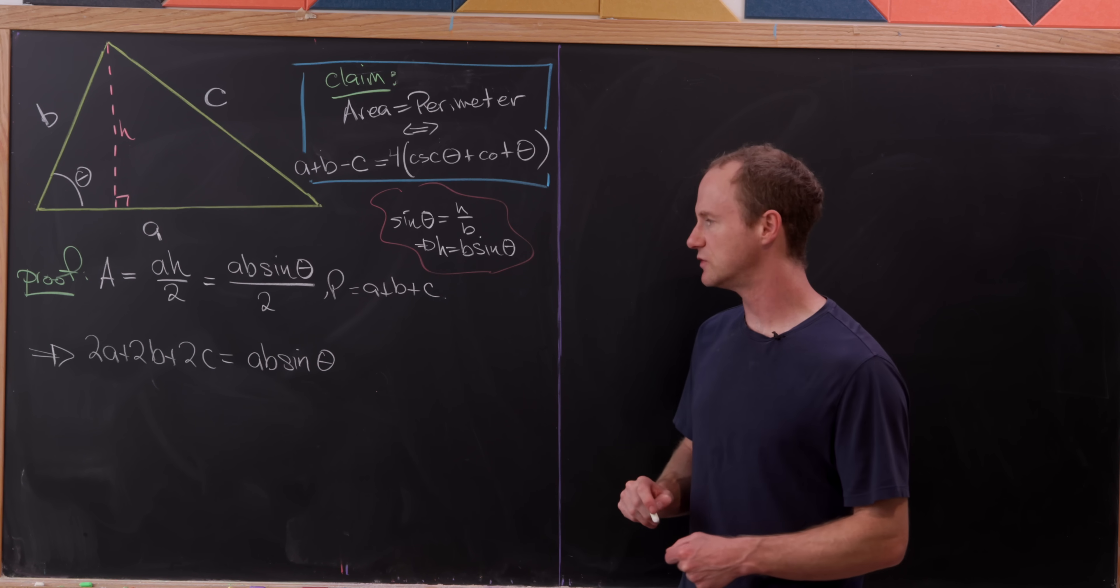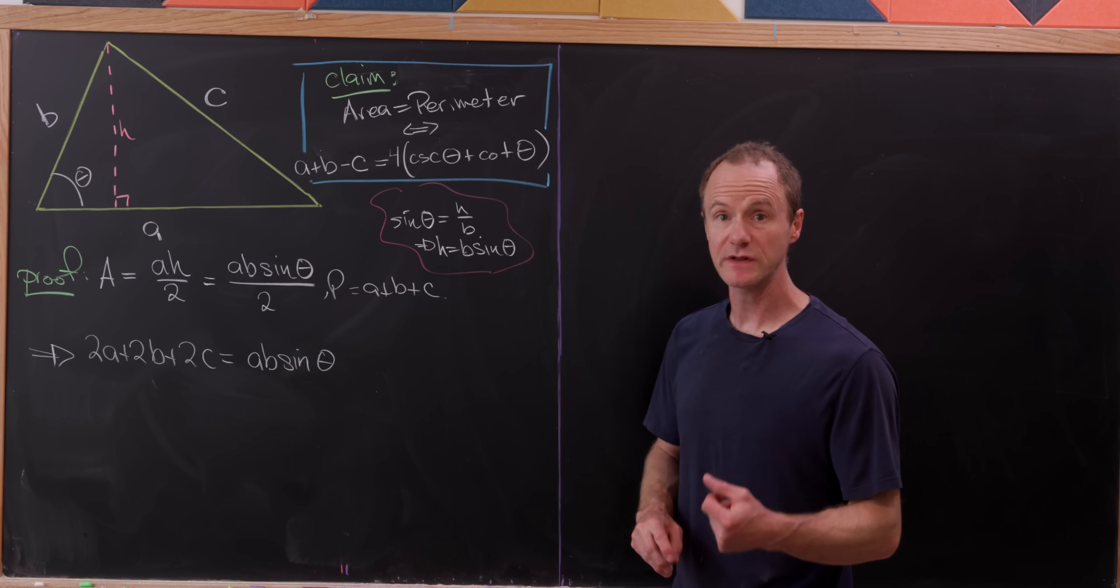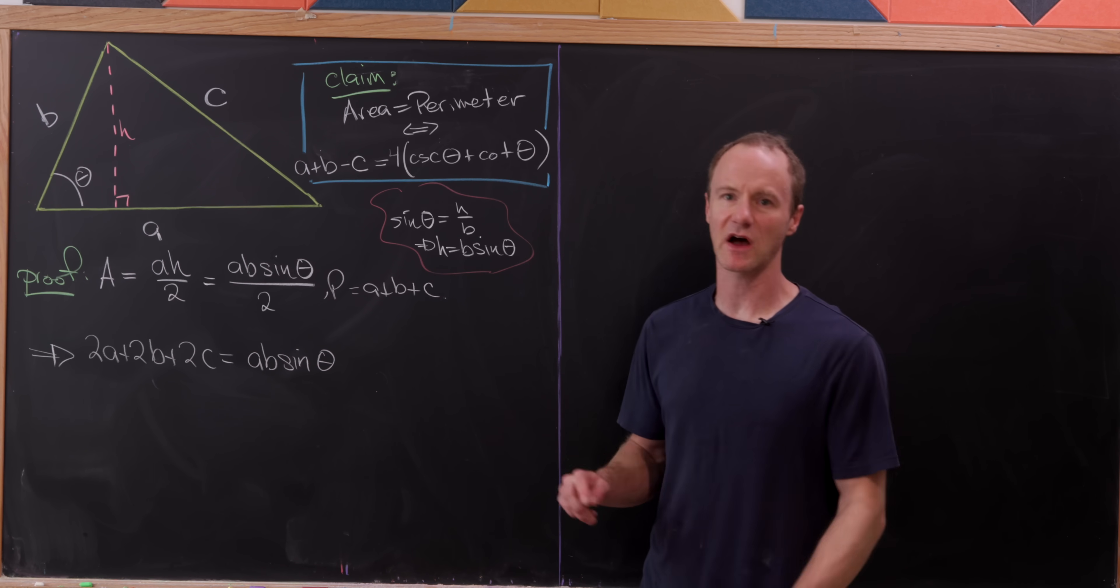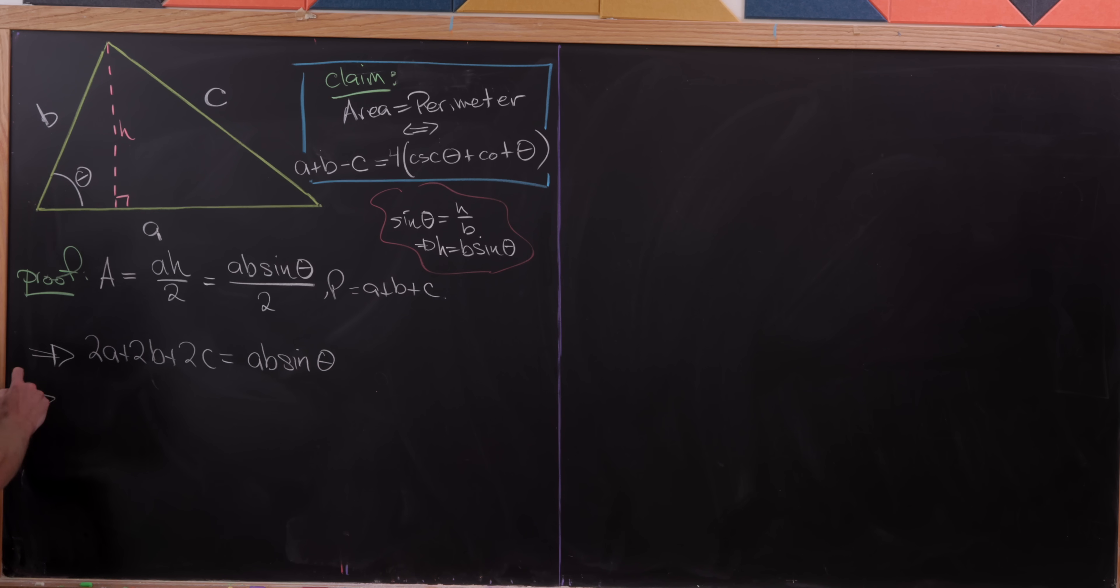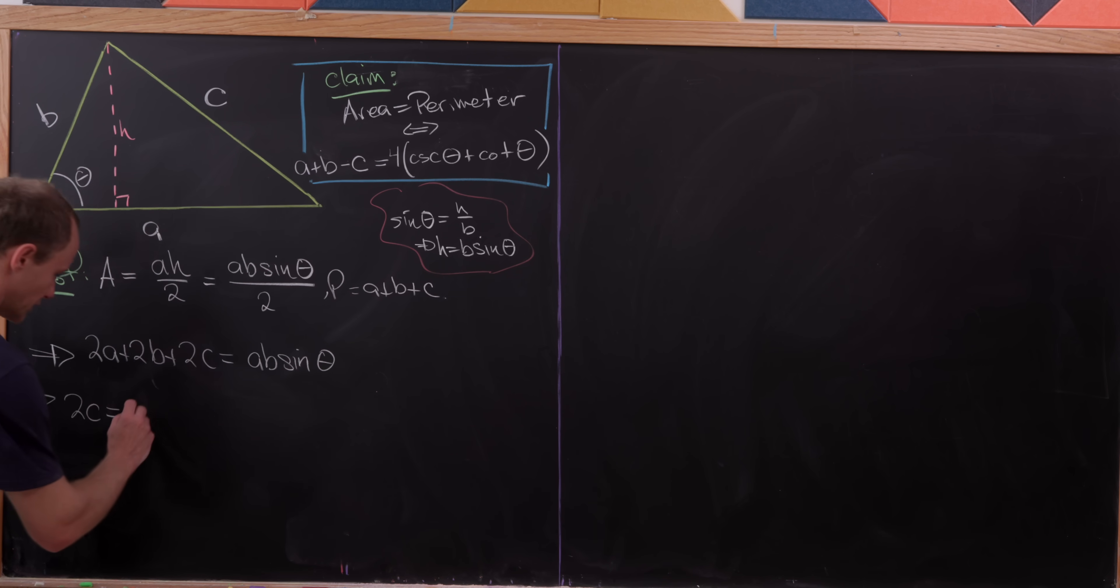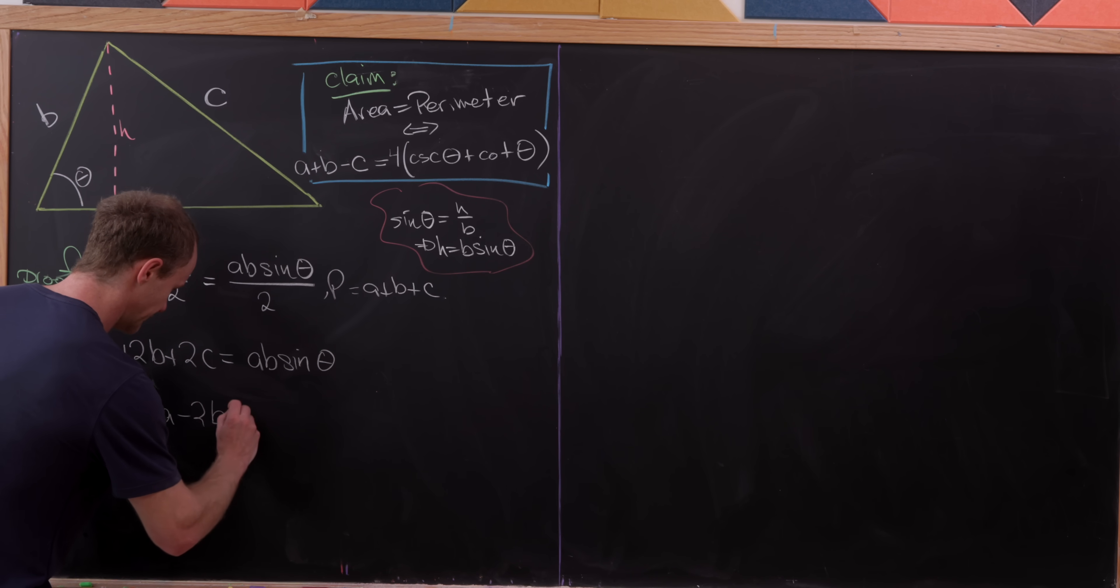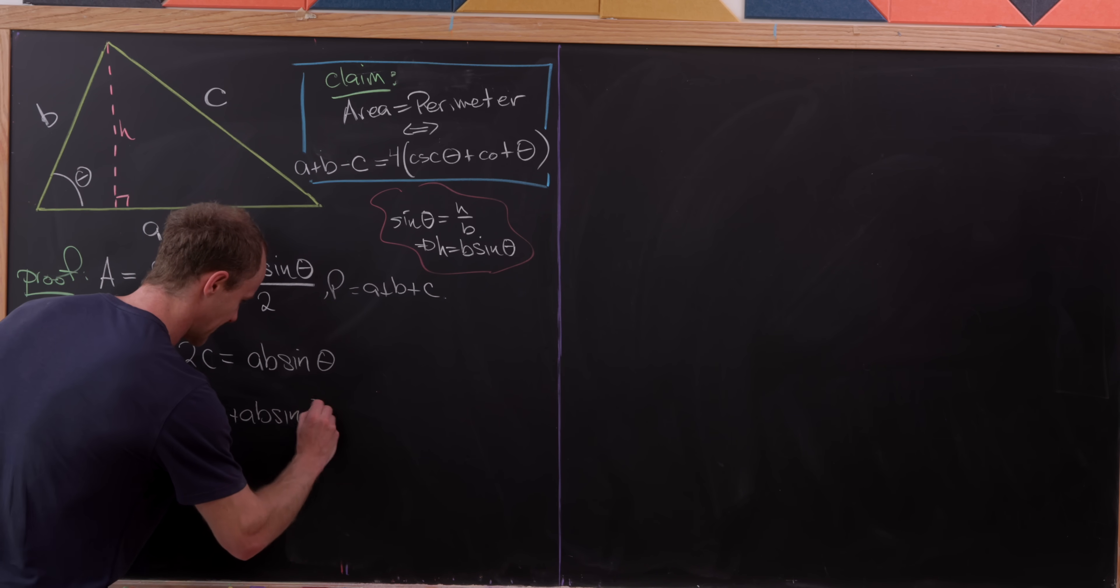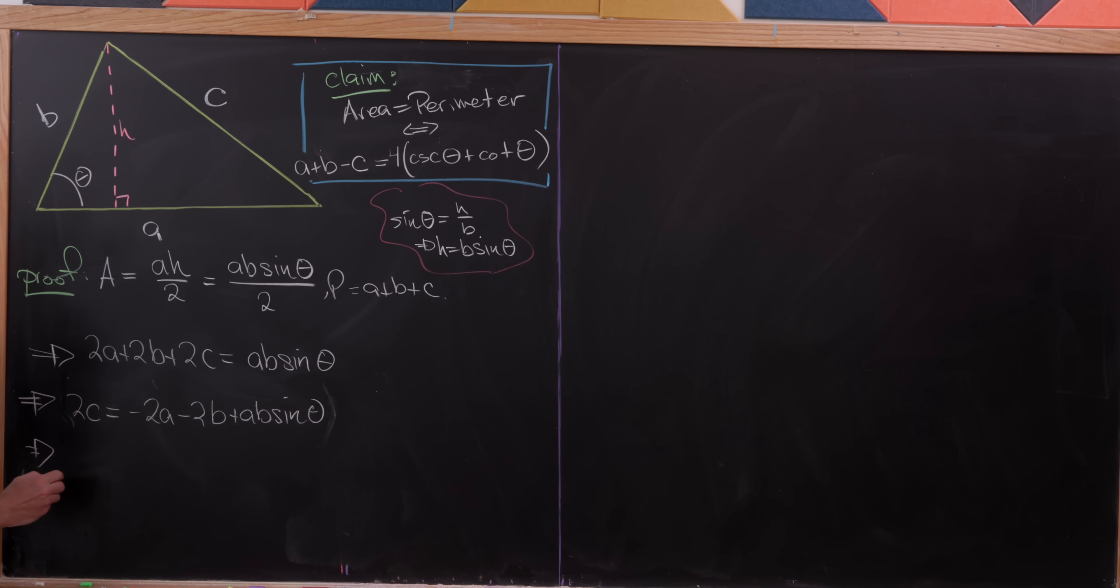But now what I'd like to do is work towards eliminating c. And I can do that with the law of cosines, which can be thought of as a generalization of the Pythagorean theorem. In order to do that, I'm going to isolate 2c. So here I have 2c is equal to minus 2a minus 2b plus ab times the sine of theta. And now what I'll do is I'll take this entire quantity and I'll square it.